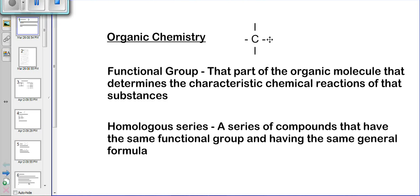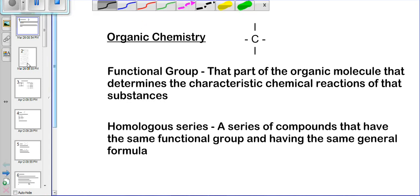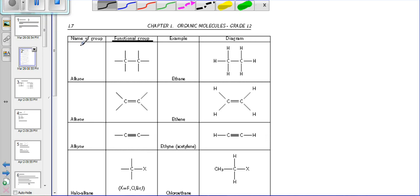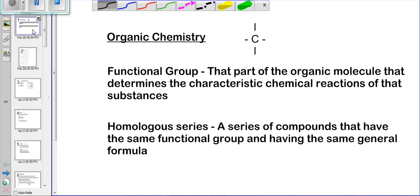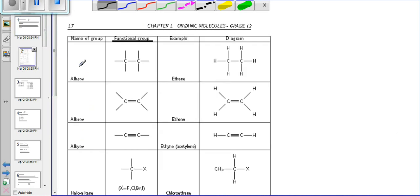Looking at certain definitions and concepts we have to know: there is something called functional groups and something called the homologous series. The functional group is that part of the organic molecule that determines the characteristic chemical reaction of that substance. Looking at the table, we have groups named alkane, alkene, alkyne, haloalkane, and so on, and the table describes each functional group. The functional group is that unique part of the organic molecule that determines the characteristic reactions of that substance.